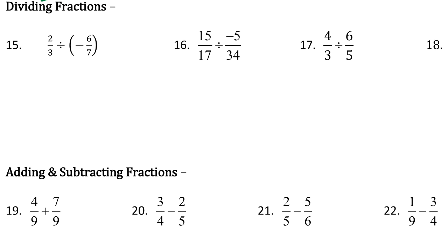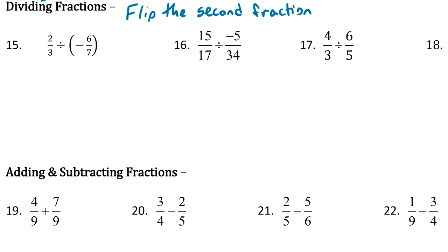Next up is dividing fractions. Luckily, dividing is not much different than multiplying — there's just one step at the beginning that's different. For dividing fractions, here's all you have to remember: flip the second fraction. By flip, I mean the top becomes the bottom and the bottom becomes the top — flip it upside down. Then multiply. Once you flip it, you're just multiplying like we just did. The only new thing is flip it, then follow the exact same steps.